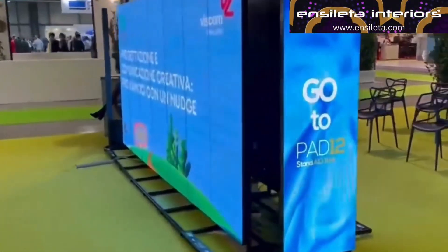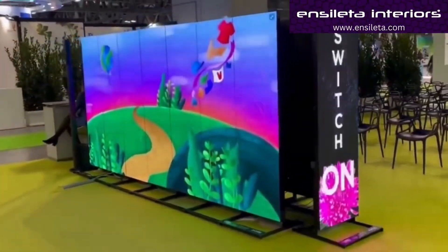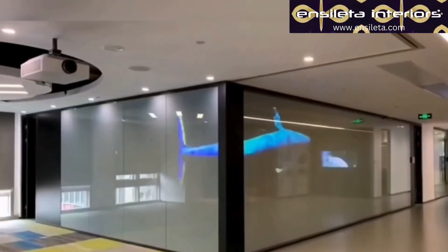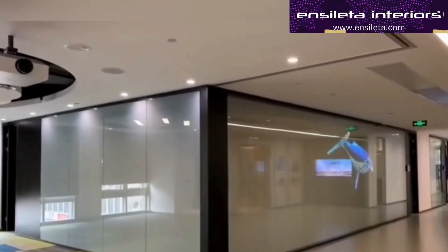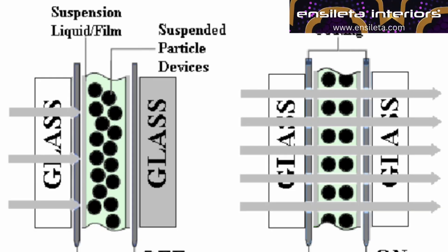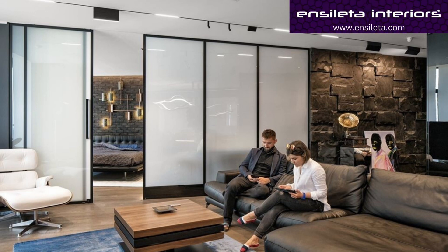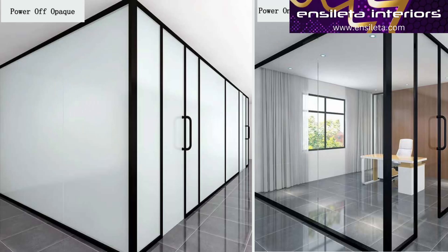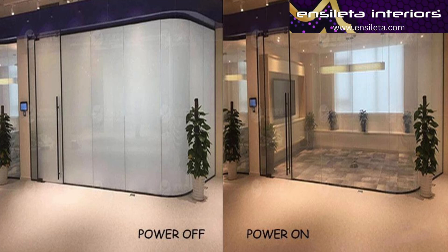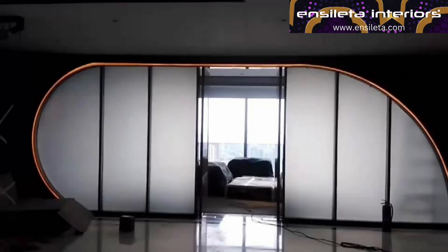This is smart glass. There are many things. It is a polymer dispersing liquid crystal — this is PDLC. It is a suspended particle device — SPD. It is an electrochromatic glass, a transparent glass. This is PDLC glass. It is mostly used for partitions.